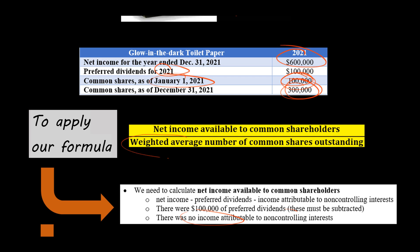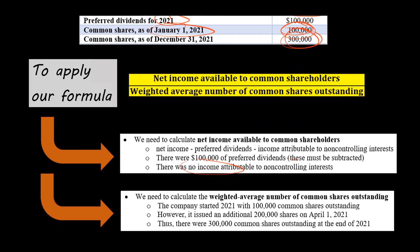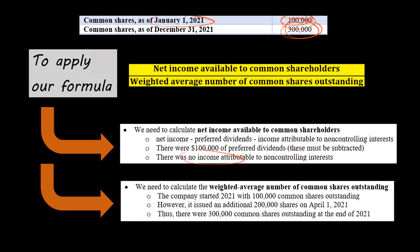Now let's look at our denominator — the weighted average number of common shares outstanding. To do that, we need to know when the new shares were issued. They started 2021 with 100,000 shares outstanding. However, on April 1st, 2021 — after three months — they issued an additional 200,000 shares, which is why there were 300,000 shares outstanding at the end of 2021.